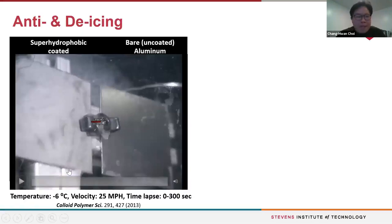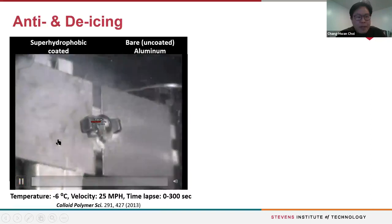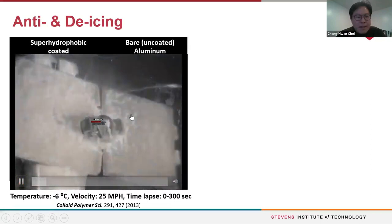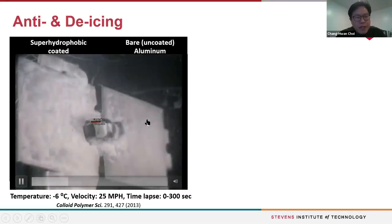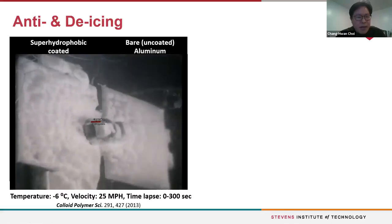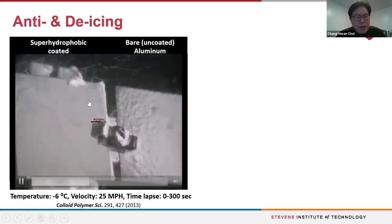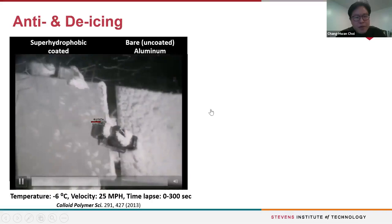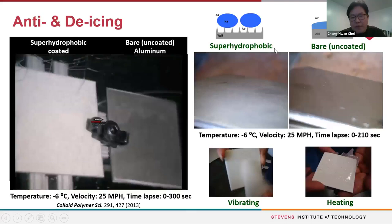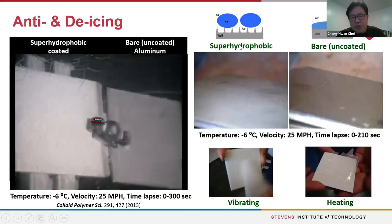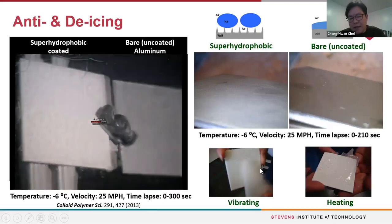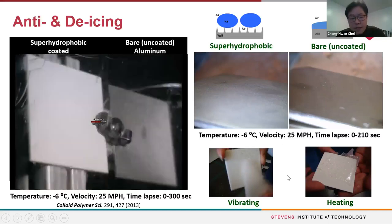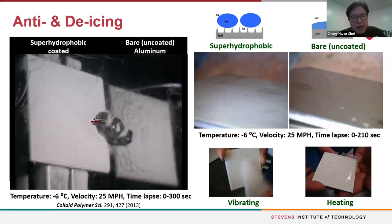We can also use this for anti-icing. We tested our surfaces in a wind tunnel and found that, depending on surface type, we can create anti-icing surfaces for avionic and other applications. Our surface really does not accumulate ice compared to bare aluminum. Even when ice eventually grows over time, applying small mechanical energy like vibration, or a small amount of heat, easily disconnects the ice layer from the surface, enabling de-icing with less energy. If applied to airplanes, the coating would minimize icing and facilitate de-icing.